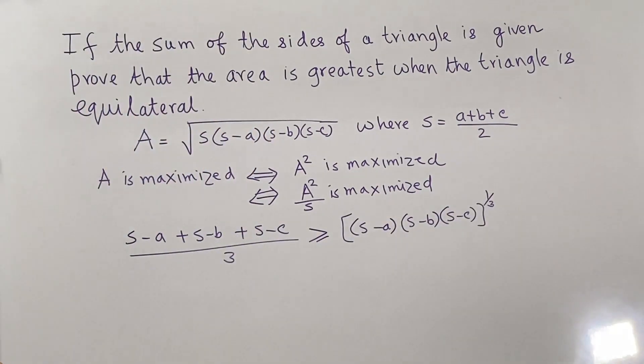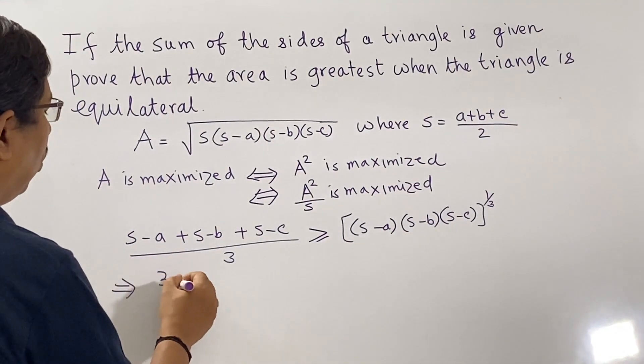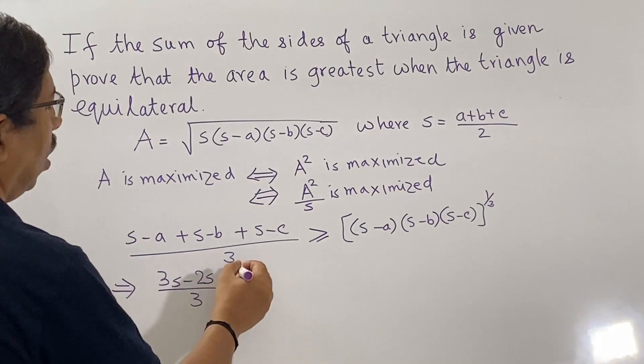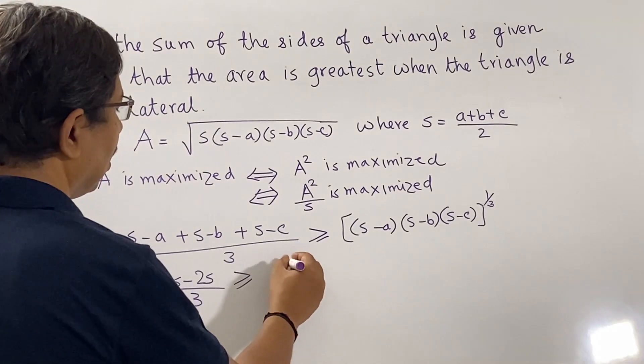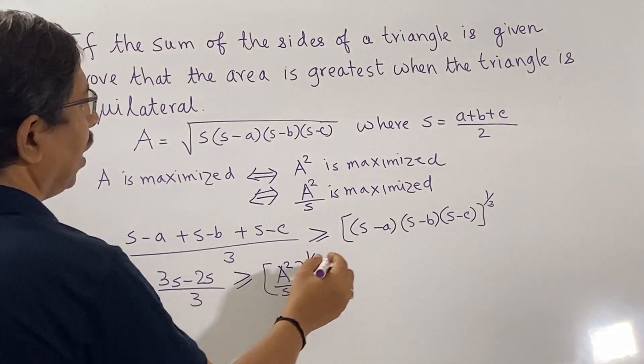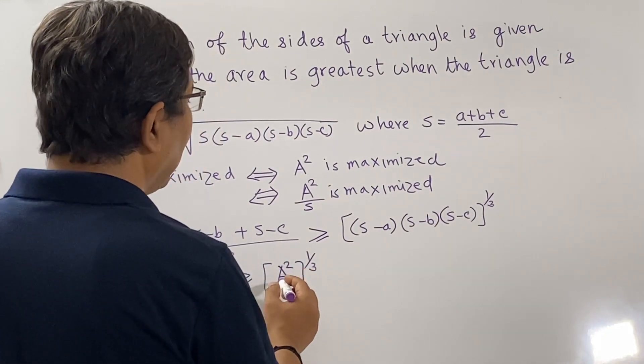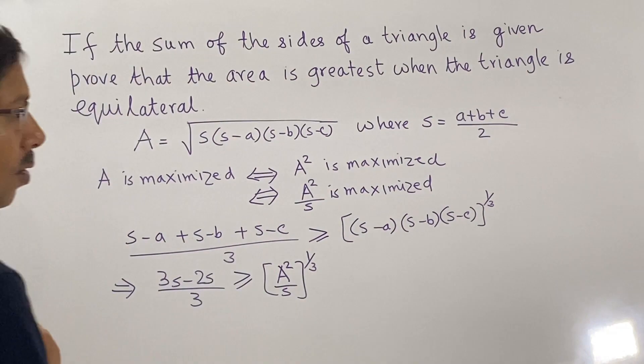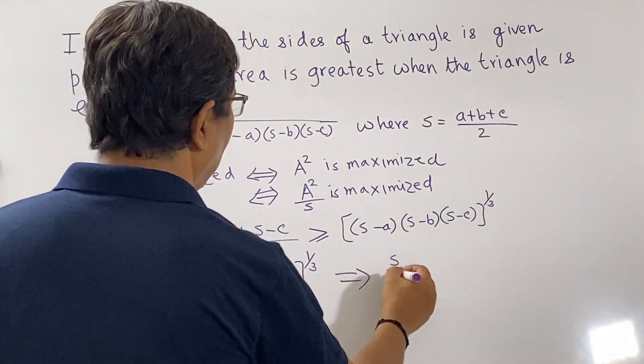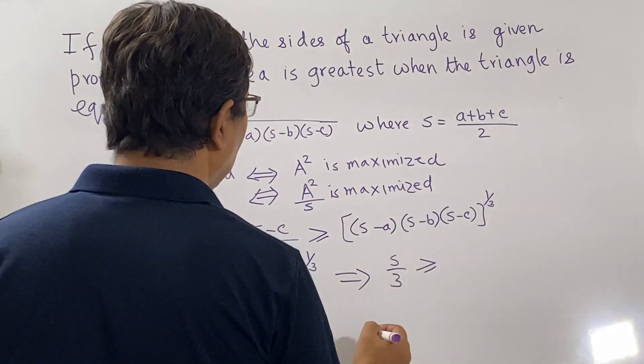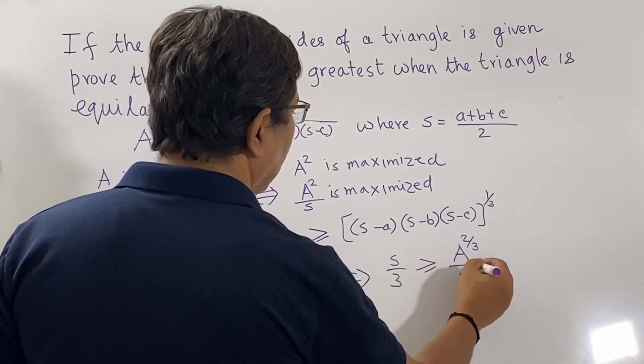Now simplifying, the left hand side is S by 3, which is greater than or equal to A squared by S to the power 1 by 3. Note that (S-A) into (S-B) into (S-C) is nothing but A squared by S. Now that gives us S by 3 is greater than equal to A to the power 2 by 3 divided by S to the power 1 by 3.